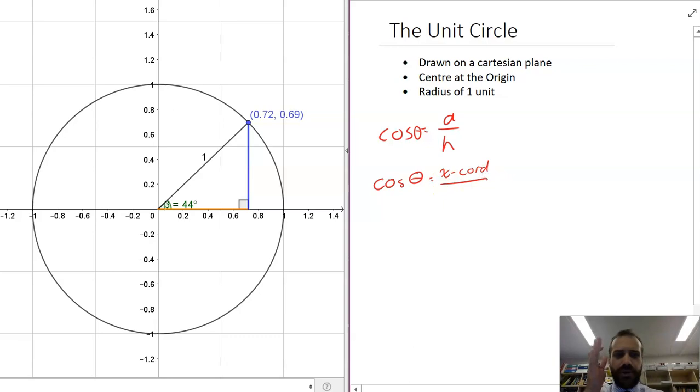And what's the hypotenuse? Well, the hypotenuse is just one, right, because it's a unit circle. So now we can say that cos θ is equal to the x-coordinate.